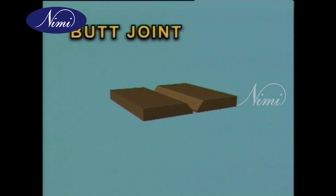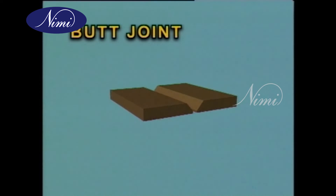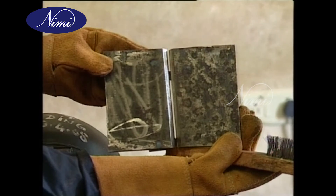In butt joints, one plate is placed adjacent to the other plate with a small gap in between, called the root gap.